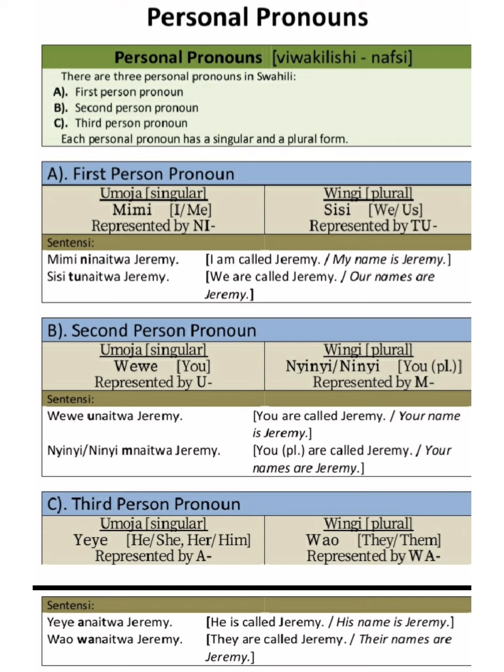When we put the first person into plural, 'mimi' becomes 'sisi,' meaning 'we.' In Kiswahili, 'sisi' is represented by 'tu' in a sentence. For example: 'Sisi tuinaitwa Jeremi' — we are called Jeremi. So notice how we use 'ni' in singular and 'tu' in plural for the first person pronoun.